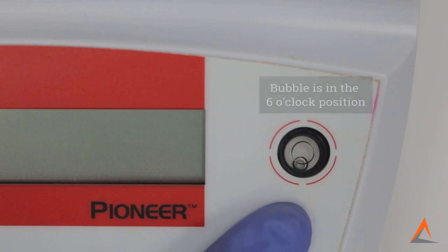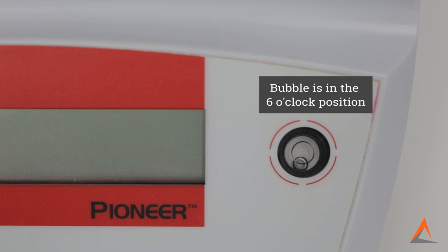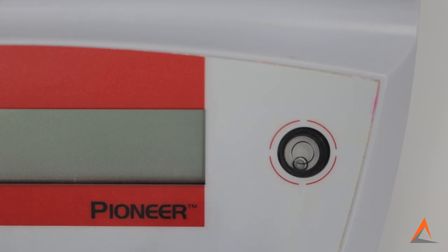For example, if the air bubble is in the six o'clock position, this means that the front of the balance is higher than the back. Therefore, it is not level vertically. It is, however, level horizontally as the bubble is not towards the one o'clock or eleven o'clock positions.